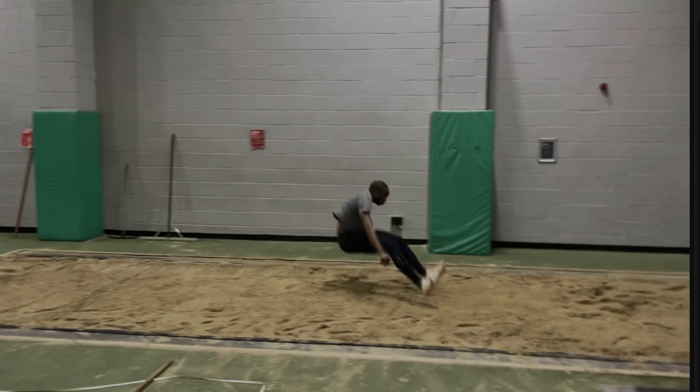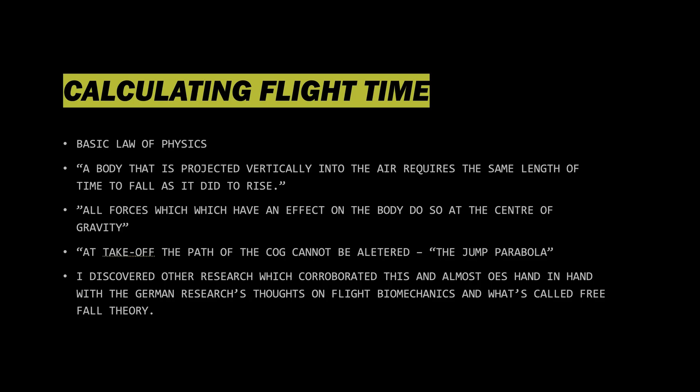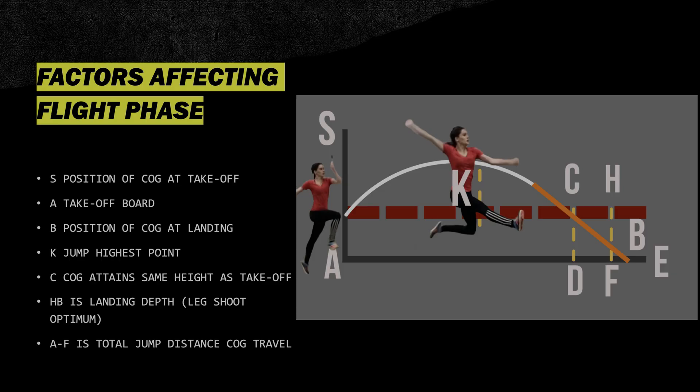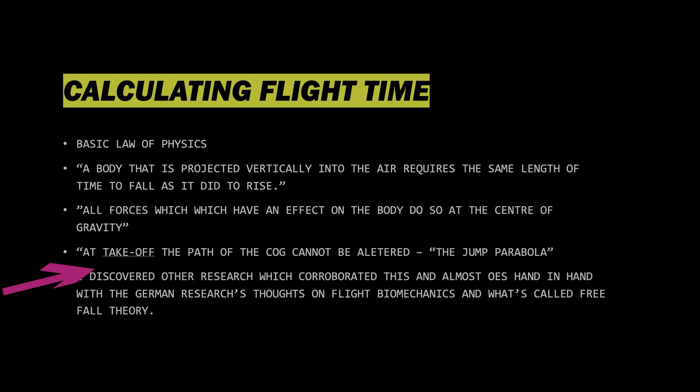Landing depth — I need to say a little bit more about that. An optimised leg shoot is what the Germans are referring to with landing depth: getting the feet as far ahead as possible without the athlete falling backwards or over-rotating forwards. The next slide explains how the Germans calculated flight time and its relevance to determining jump distance. Crucially, once the long jumper leaves the board, their centre of gravity flight path is determined and cannot be changed. The centre of gravity will follow that curve no matter what happens, and the legs will either rotate under it or in front of it. At takeoff, the path of the centre of gravity cannot be altered.